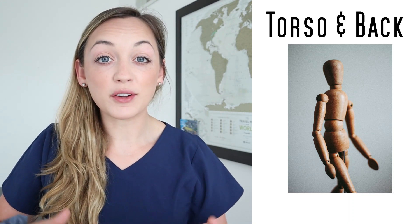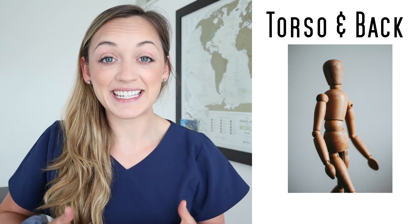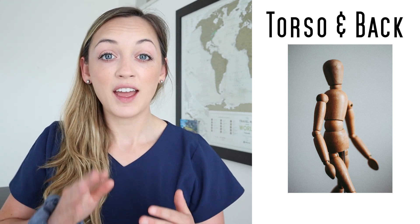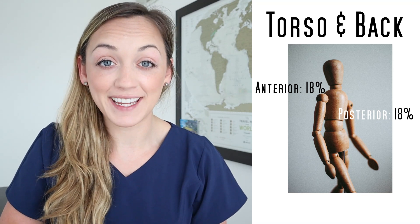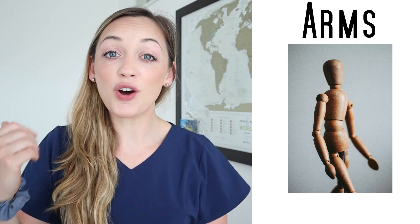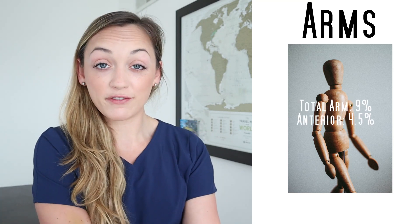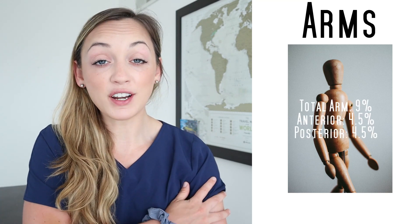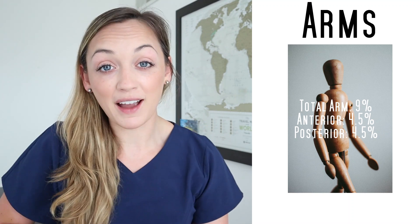Next let's move down to the torso. The front of the torso is a total of 18%. Flip the patient over and the back is also a total of 18%. Now let's move to the arms. Each arm has a total of 9% — 4.5% being the front of the arm and 4.5% being the back of the arm.